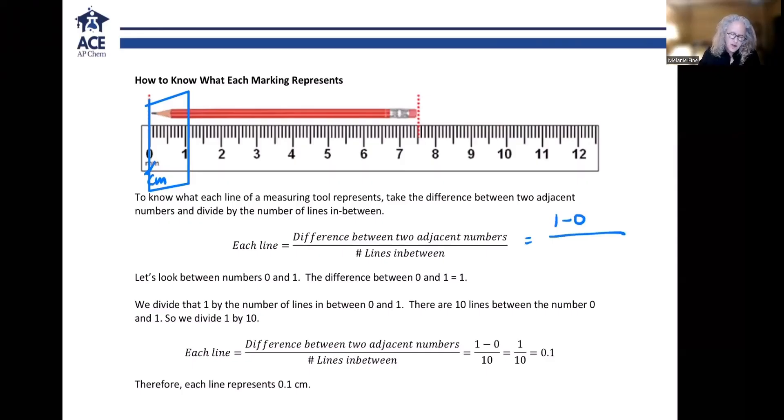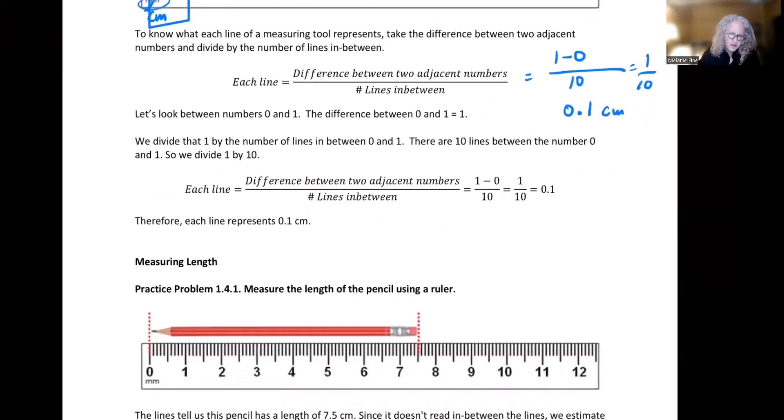That would be 1, 2, 3, 4, 5, 6, 7, 8, 9, 10. So it's 1 minus 0 divided by 10, which is 1 over 10. So I know that each line represents 0.1 centimeters. It's actually a millimeter, which is why they have millimeters written here, but it's really confusing because you might think that it's 0.1 millimeters. It's not. It's 0.1 centimeters.